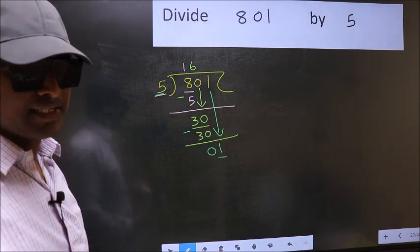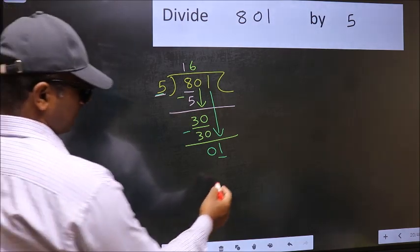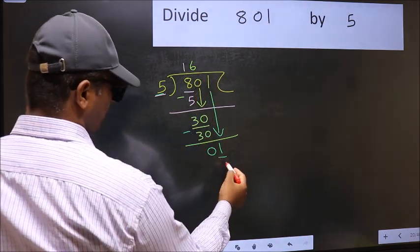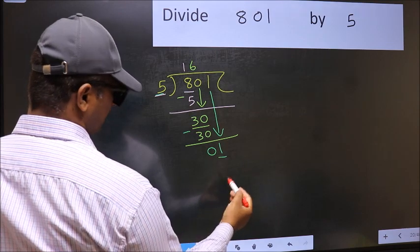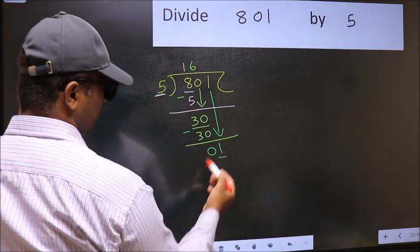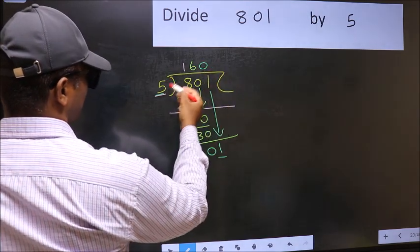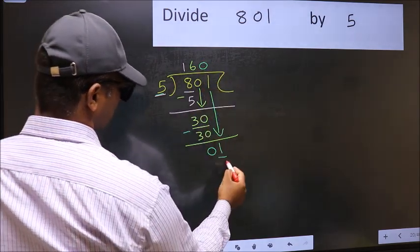what you should think of doing is, what number should we write here. If I take 1 here, we will get 5. But 5 is larger than 1. So what we should do is, we should take 0. So 5 into 0, 0.